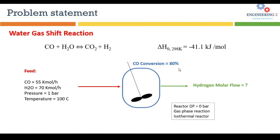In this reaction, carbon monoxide is converted 80% into products. We need to find the hydrogen molar flow rate in the product stream. We are assuming no pressure drop inside the reactor, the reaction is gas phase, and the reacting condition is isothermal — there is no change in temperature inside the reactor. Now let's move to Aspen HYSYS to solve this problem.